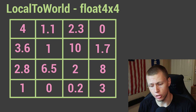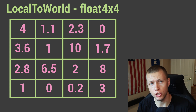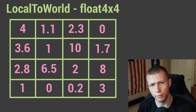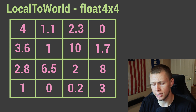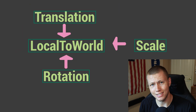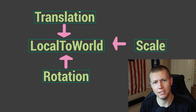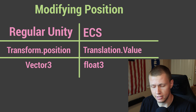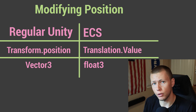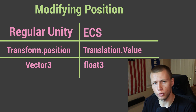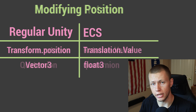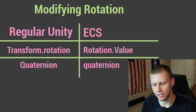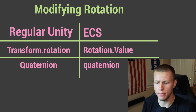It is possible to directly modify the LocalToWorld component, and I'll show you how. However, to make things easier Unity provides helper components: Translation, Rotation, and Scale, which you can modify more directly and they'll calculate the LocalToWorld value. The Translation component stores position as a float3 — equivalent to Vector3 transform.position in regular Unity. The Rotation component is of type quaternion with a lowercase 'q', which is different from the capital-Q Quaternion type in regular Unity.